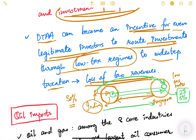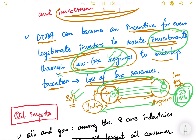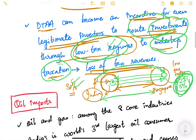Since India and Singapore have a DTAA, even when he brings this money back to India he will not pay taxes again. So he routes investment through a low-tax regime to sidestep taxation — paying lower taxes in Singapore instead of 30 percent in India. He tells the Indian government: 'I have already paid income tax on this income in Singapore, and you have a DTAA with Singapore, so I will not pay taxes again in India.' This is how DTAA can be misused.